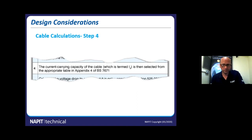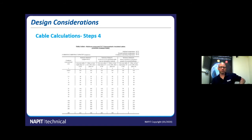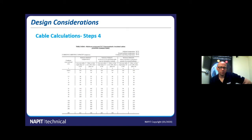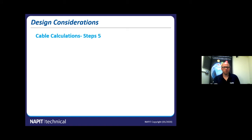The next step is to select the current carrying capacity of a cable from Appendix 4. If we need 60 amps, clipped direct reference method C, a 6 mm² cable is rated at only 49 A, but a 10 mm² is rated at 67 A — so we can crack on with 10 mm² as our starting point. We've got that cable now, but it's not set in stone and we may need to alter it — there are a few more things to think about. We now have to consider voltage drop and ensure it's not too excessive.